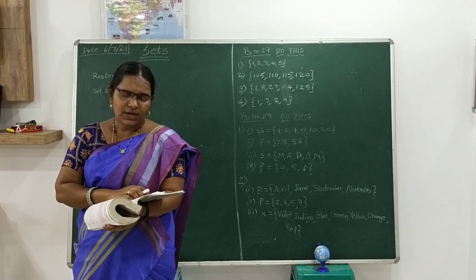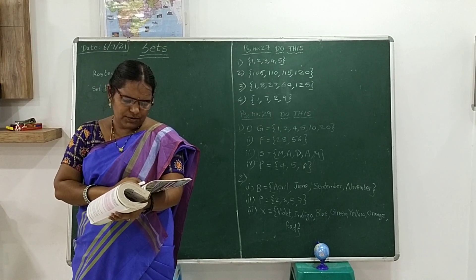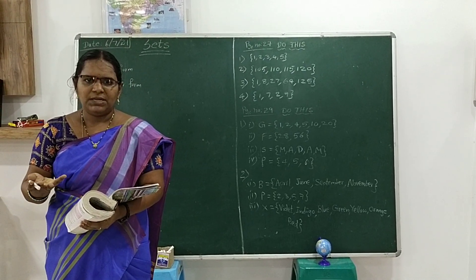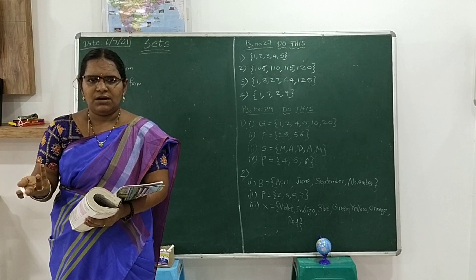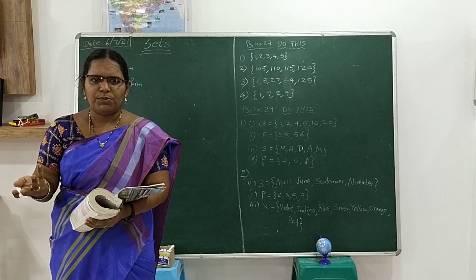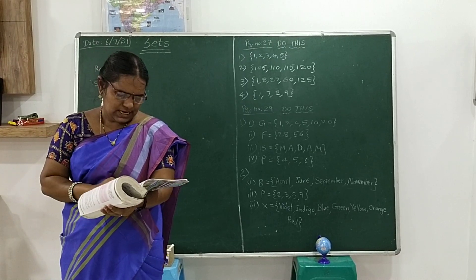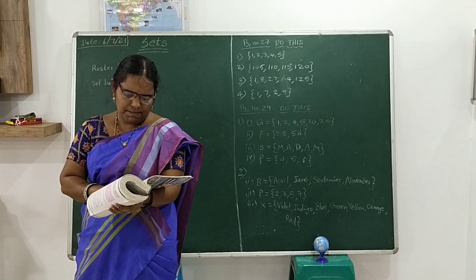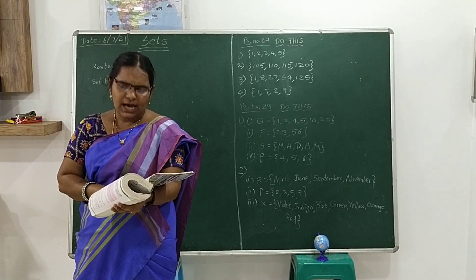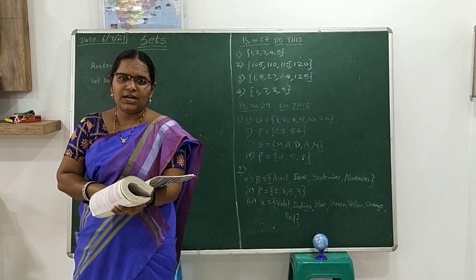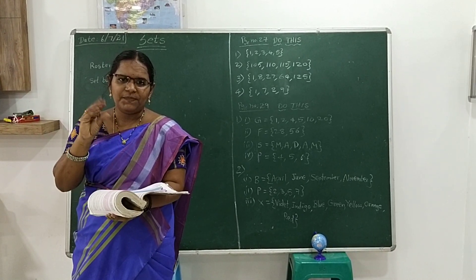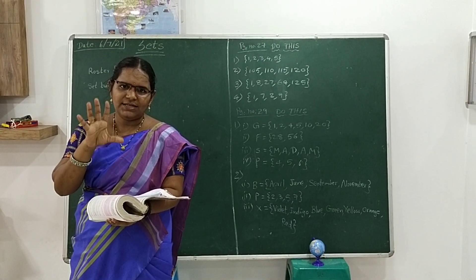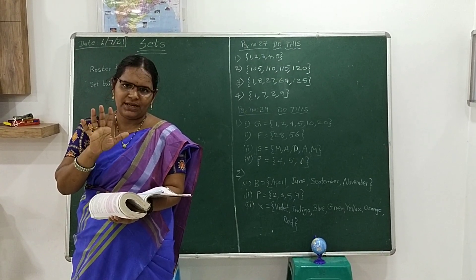4th one: January, February, March, April and so on. The common property is months in a year. 5th one: thumb, index finger, middle finger, ring finger and pinky — these are fingers of our hand. That is the common property here.